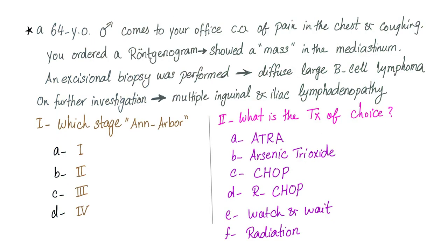Here is a case: a 64-year-old male presents with chest pain and coughing. An X-ray shows a mass in the mediastinum. An excisional biopsy gives a diagnosis of diffuse large B-cell lymphoma. On further investigation, there is multiple inguinal and iliac lymphadenopathy. What stage of the Ann Arbor classification is this? And what is the treatment of choice: ATRA, arsenic trioxide, CHOP, R-CHOP, watch and wait, or radiation? Please comment below.